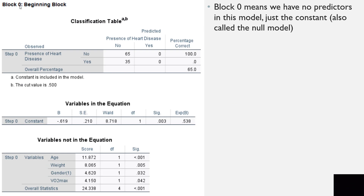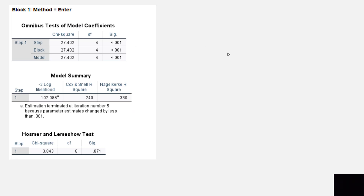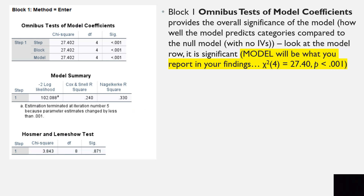Block 0 — the beginning block — means we have no predictors in the model, just the constant; this is also called the null model. The classification table here functions like a contingency table. Without any independent variables, the best guess is to simply assume all participants did not have heart disease, which correctly classifies 65% of cases overall, shown in the overall percentage row.